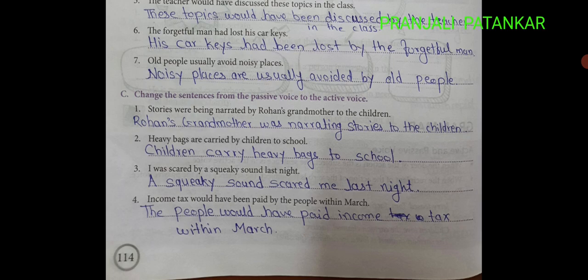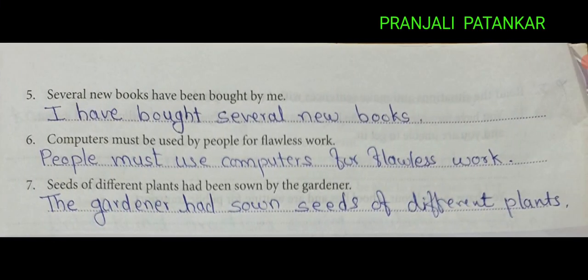Then C: Change the sentences from passive voice to active voice. 1. Stories were being narrated by Rohan's grandmother to the children — Rohan's grandmother was narrating stories to the children. 2. Heavy bags are carried by children to school — Children carry heavy bags to school. 3. I was scared by a squeaky sound last night — A squeaky sound scared me last night. 4. Income tax would have been paid by the people within March — The people would have paid income tax within March. 5. Several new books have been bought by me — I have bought several new books.